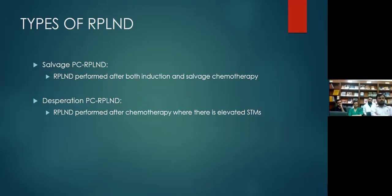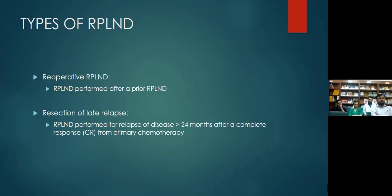Desperation post-chemotherapy RPLND is performed even when there are elevated serum tumor markers — unlike the other types where normal markers are a prerequisite. Reoperative RPLND involves a prior RPLND followed by resection of late relapse, defined as disease recurrence after two years of complete response.